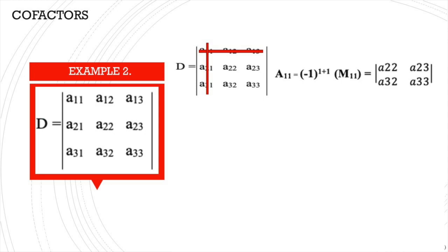Since kinukuha natin ang cofactor ng a11, ang row number nito ay 1 at ang column number nito ay 1. So substitute lang natin sa binigay na formula: aij is equal to negative 1 raised to 1 plus 1 times the minor. Makukuha natin ang minor by deleting the entire row at column kung saan ito nakalagay. Ang natitirang elements ay a22, a23, a32, at a33. Yun ang magiging minor. So para makuha yung cofactor, itatimes mo ito sa negative 1 raised to 1 plus 1, which is positive 1.